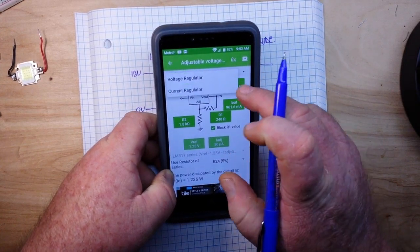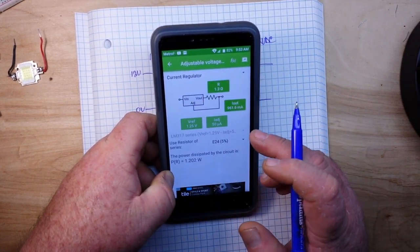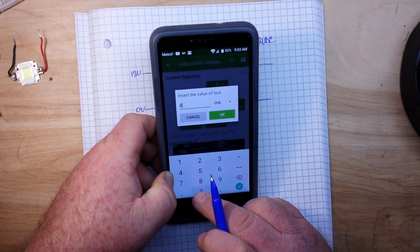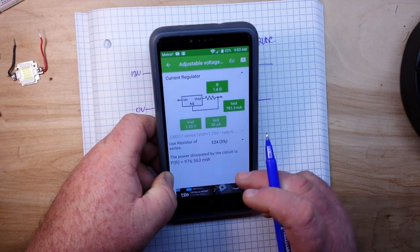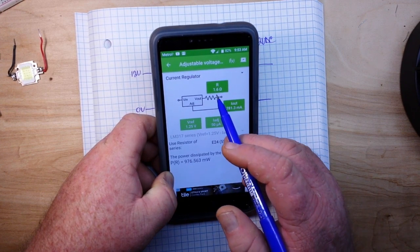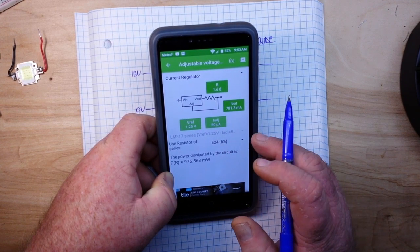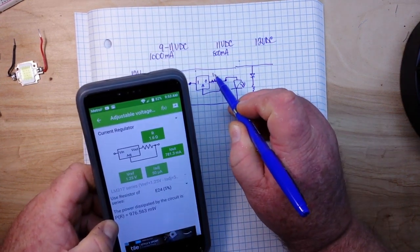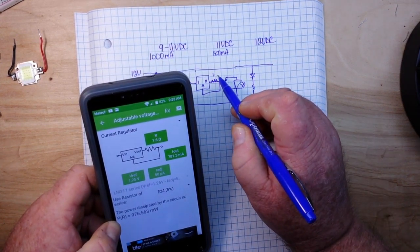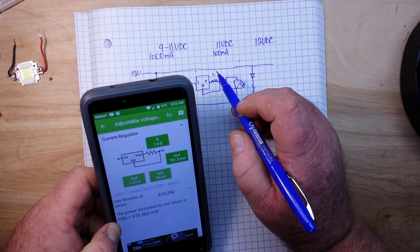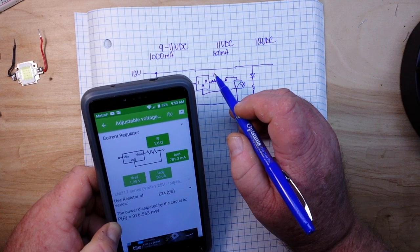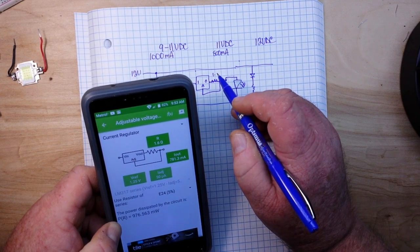Then we'll do our current regulator and we want our output to be 800 milliamps. So it tells us we need a 1.6 ohm resistor here. 1.6 ohm.